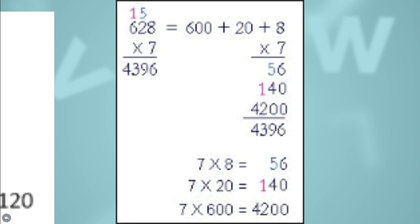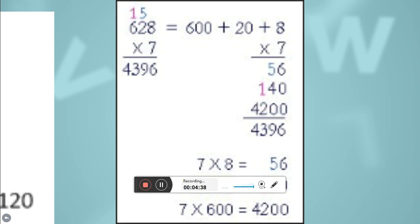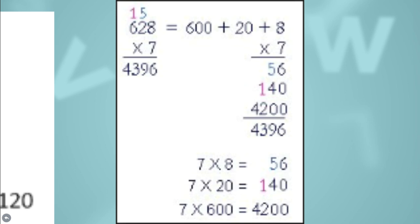Another approach is to split 628 into its place values: 600, 20, and 8. Then multiply each separately by 7: 7 × 8 = 56, 7 × 20 = 140, 7 × 600 = 4200. When we add these values — 56, 140, and 4200 — we get 4396. This is not so difficult; it's very easy.